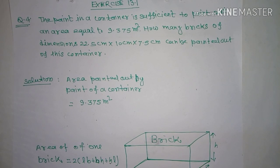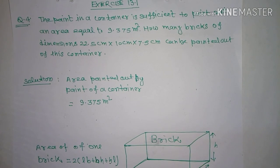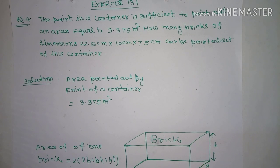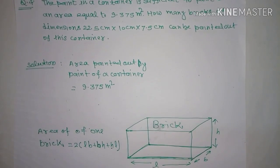So what happened is: in this container, we have 9.375 meter square area to paint. This is the total area available for painting.